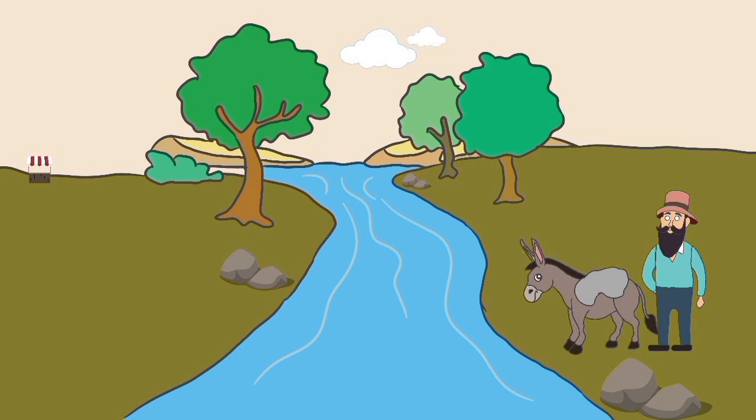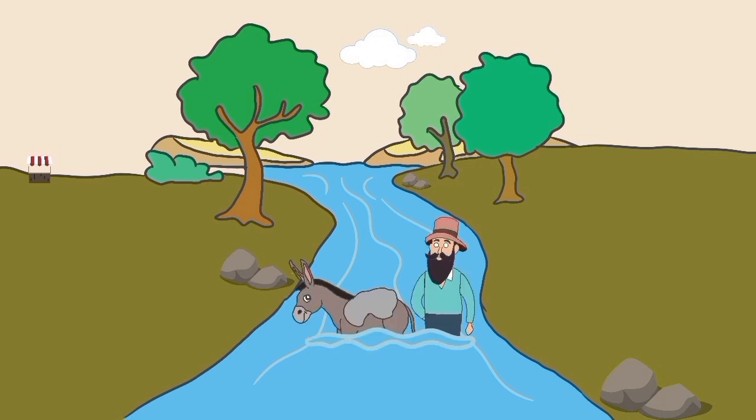When they reached the river, they started to cross it. But the donkey again played its trick to make the load on its back lighter.